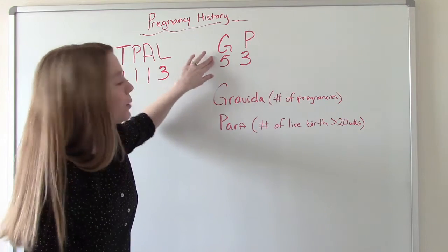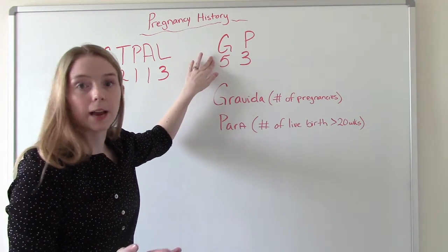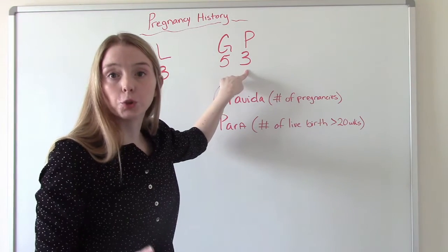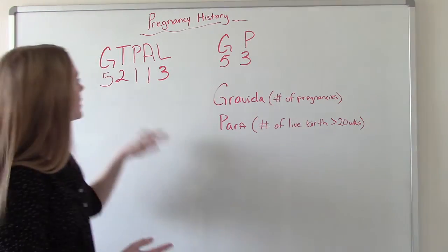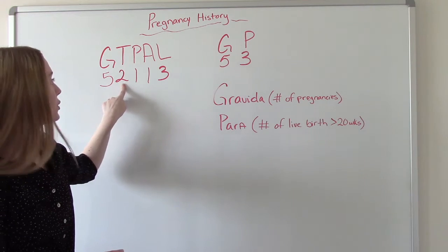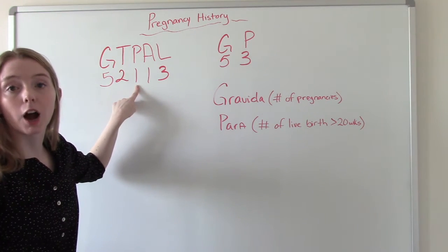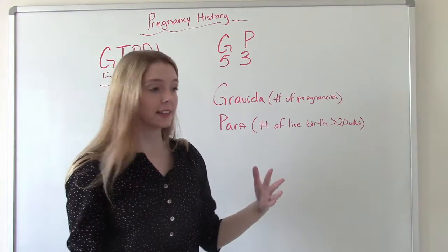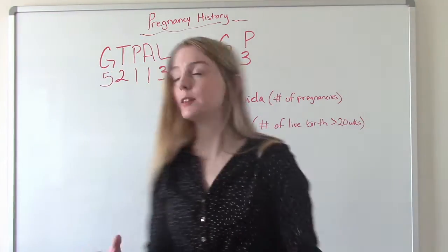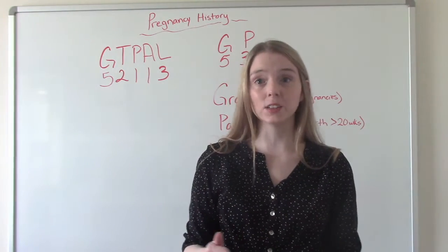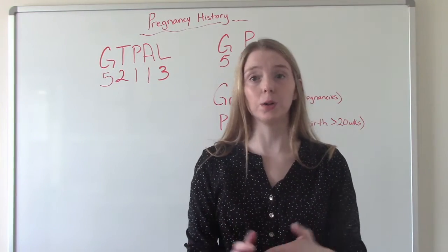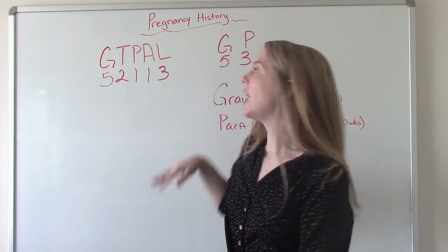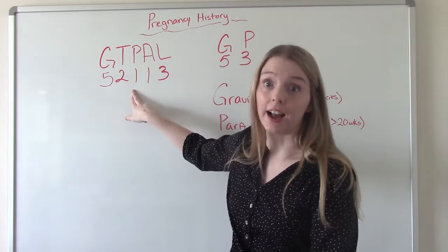Over here, she's been pregnant five times, that still is the same. And so far, she's had three deliveries after 20 weeks where the baby was born alive. So this is a combination of our T, our term deliveries, and our P, our preterm deliveries. This is a little bit more simplified. It depends on where you work, what system they use, but you need to learn both. NCLEX will ask you both, your school will ask you both, ATI will ask you both. So you definitely need to know how to do both methods, and know that this P and this P are not the same.